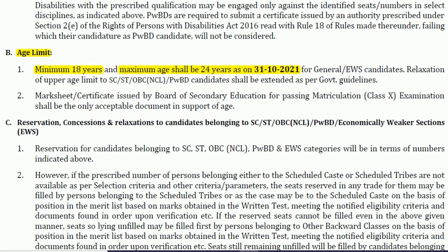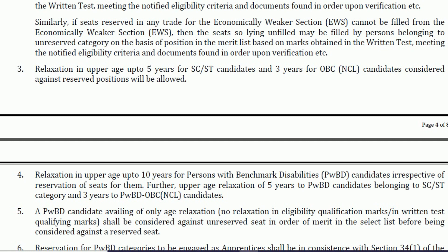The minimum age required is 18 years and the maximum is 24 years as on 31st October 2021. This applies to general and EWS candidates. Relaxation is provided for SC/ST, OBC, and PWD candidates — the upper age limit is relaxed by five years for SC/ST and three years for OBC non-creamy layer candidates.